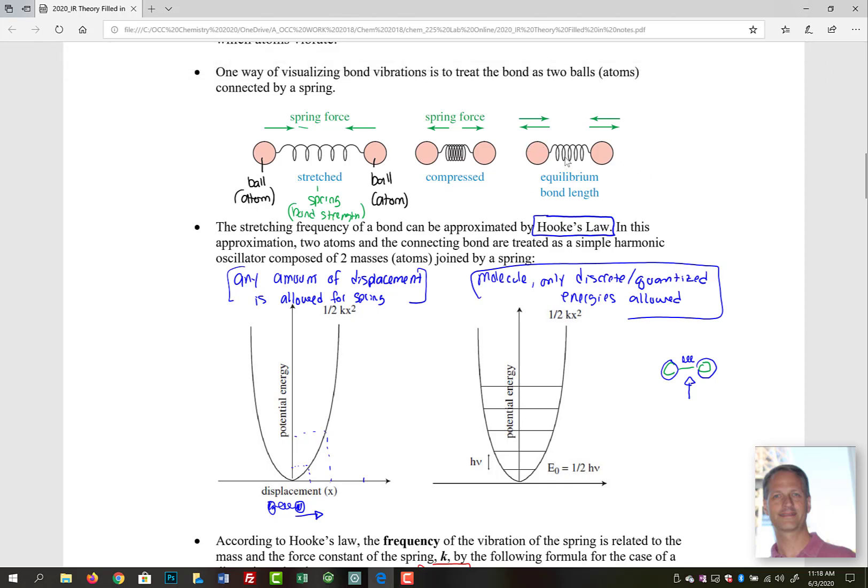One way we visualize bond vibrations is to treat them as two balls—those are atoms—connected by a spring. We have this spring force, our stretched spring representing bond strength or bond length. We can push them in together, they can become compressed, and they'll expand back out and settle into some equilibrium bond length.